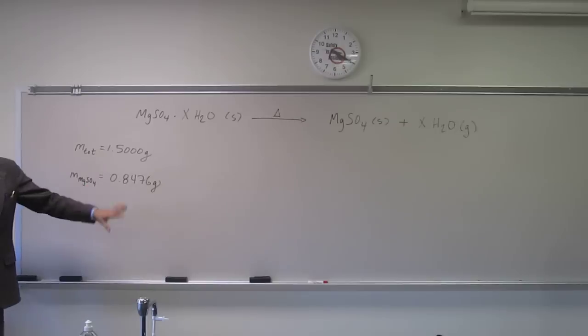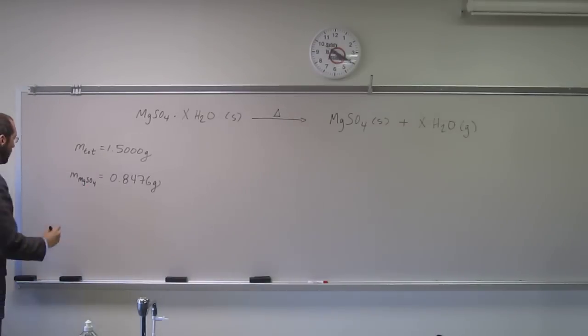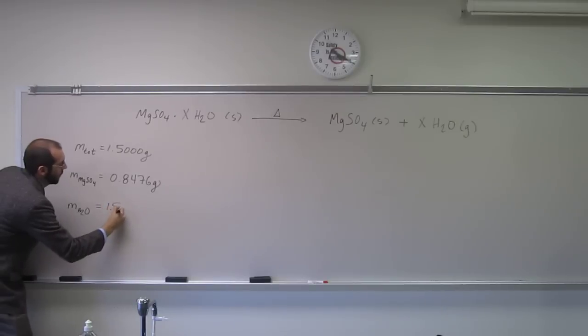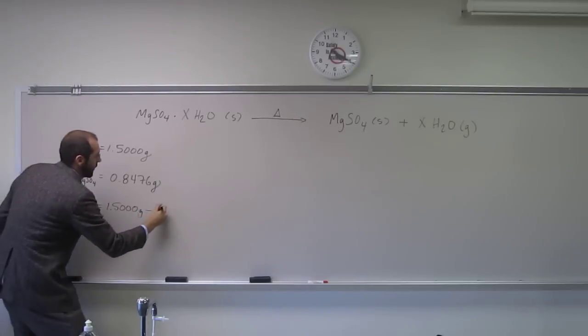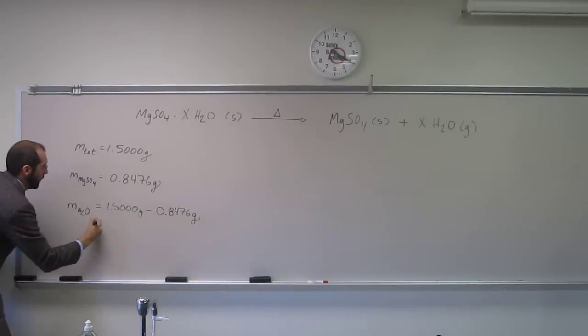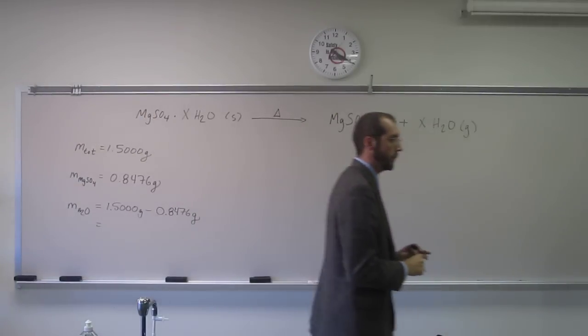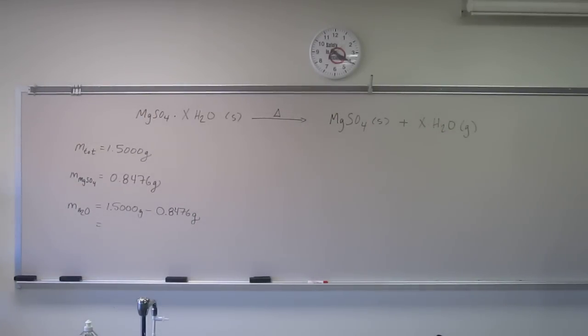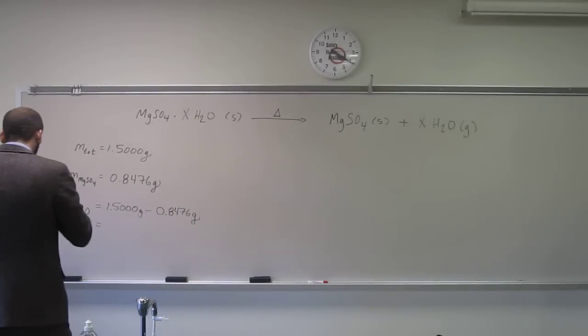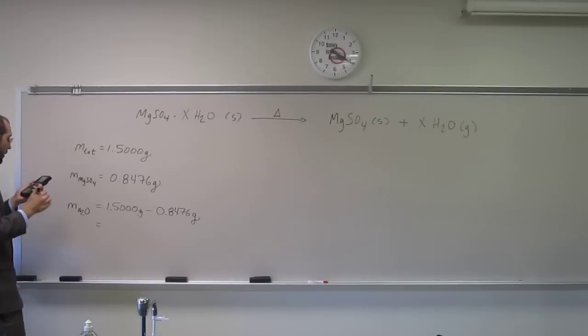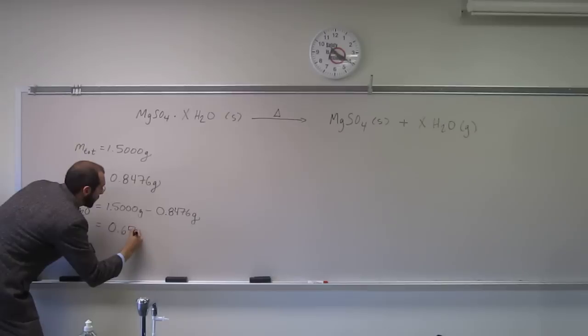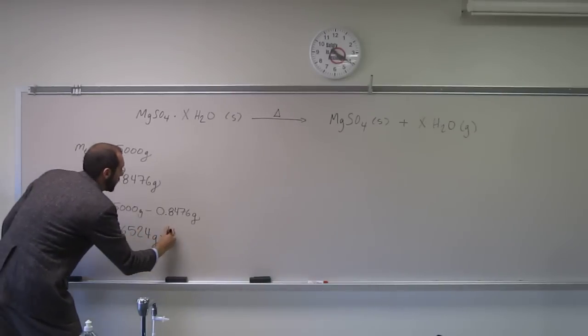Can we figure out the mass of the water from this then? Yes. So how would we do that? 1.500 grams minus 0.8476 grams. When we do that, we get 0.6524 grams of water.